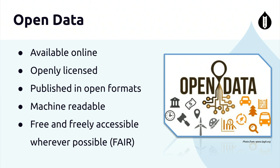A lot of GIS data is also available in open data portals as GIS layers. Data is published in open formats that are machine readable — CSV, JSON, and many open formats that can be used by third-party solutions. It's freely accessible and follows the FAIR data principle: Findable, Accessible, Interpretable, and Reproducible.